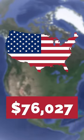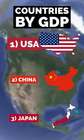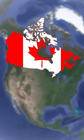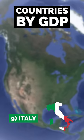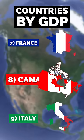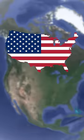The United States has a GDP of over $25 trillion and a GDP per capita of $76,027, which gives it the world's largest economy. Canada has a much lower GDP of $2.22 trillion and a GDP per capita of $57,406, which gives it the world's 8th largest economy.